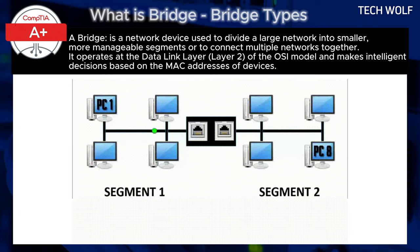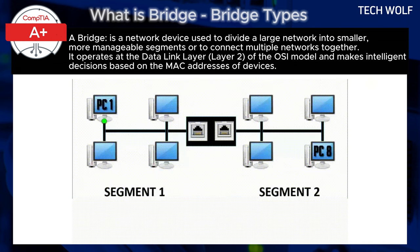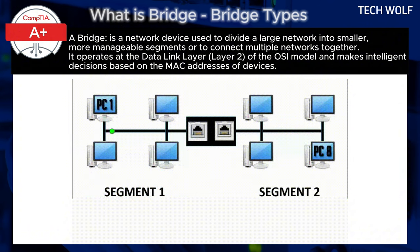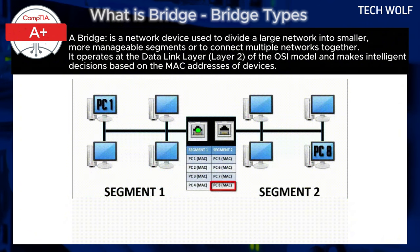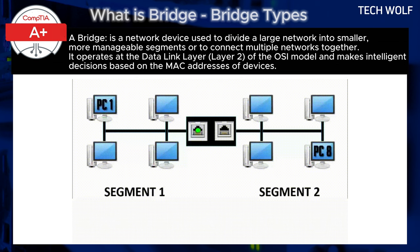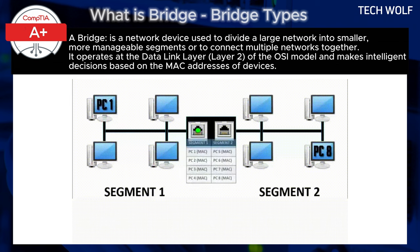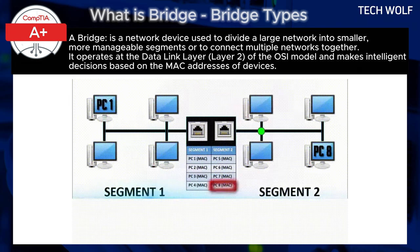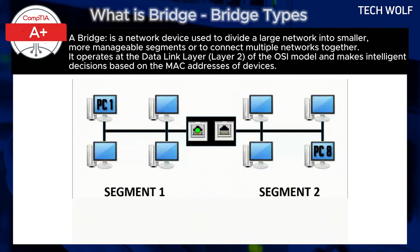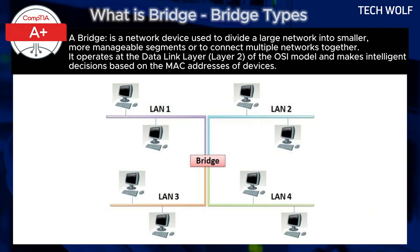How a bridge works: A bridge monitors the data packets moving across the network. When it receives a packet, the bridge looks at the MAC address of the sender and receiver to determine where to forward the packet. If the destination is on the same network segment as the sender, the bridge doesn't forward the packet. If the destination is on a different segment, the bridge forwards the packet to the correct segment.